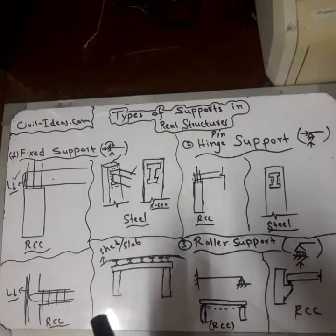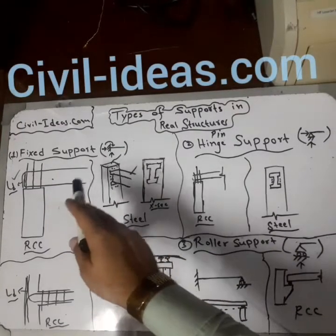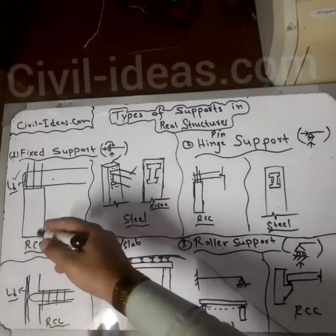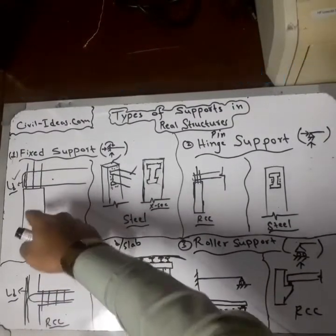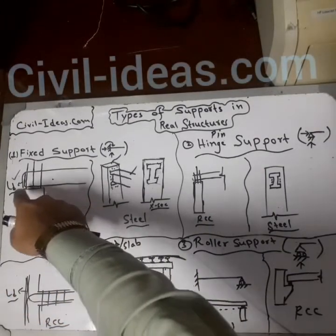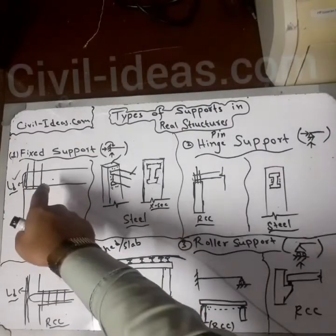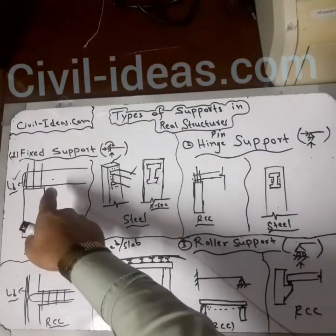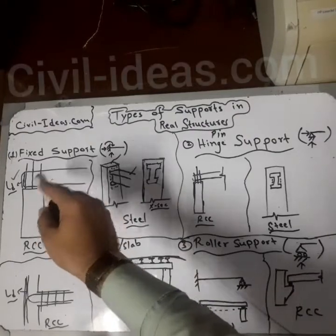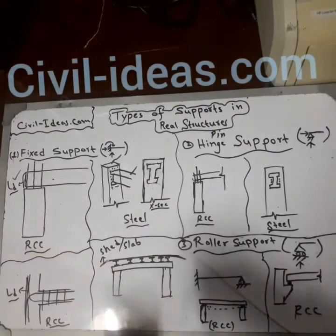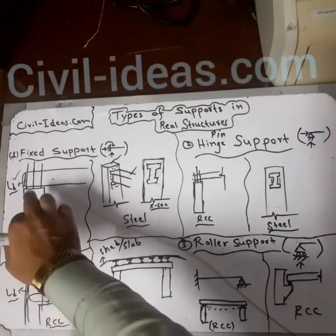Now we will discuss the basic concepts of supports in detail. First is the fixed support in an RCC structure. This is an RCC column cast up to a certain level. After fixing the reinforcement of the beam and slabs, we concrete them monolithically with the column simultaneously.